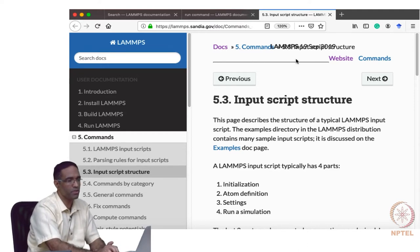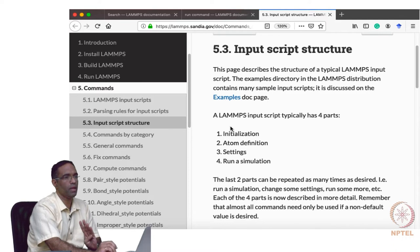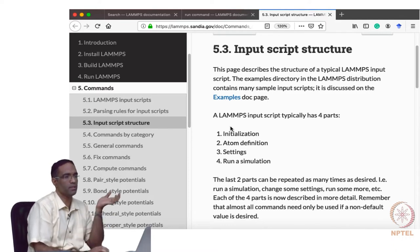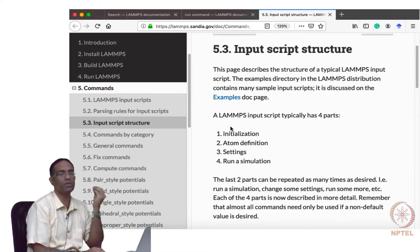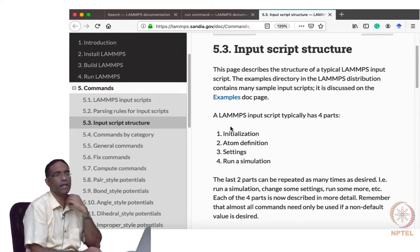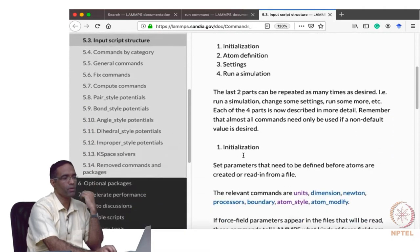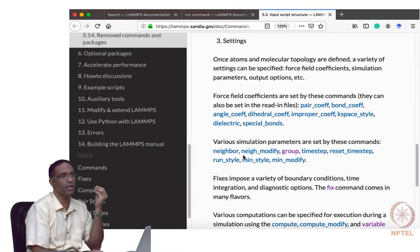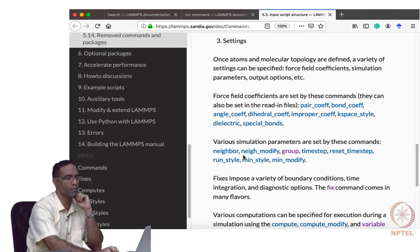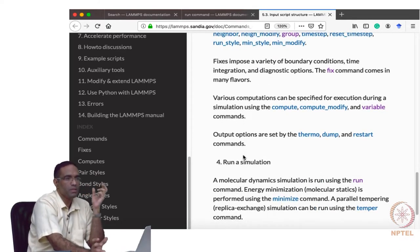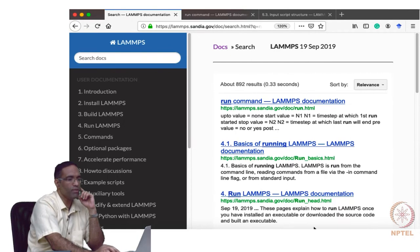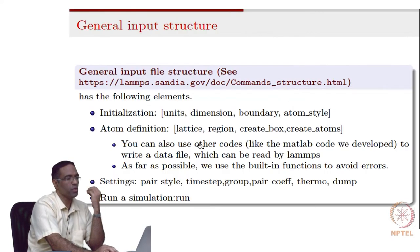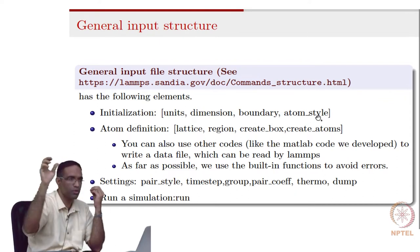Initialization means you can construct your crystal structure, define the atom's mass, its charge, and so on. There are several commands associated with each of these categories. Some commands listed for initialization are: units, dimension, boundary, and atom style. These are keywords used in LAMMPS to define certain things. For atom definition: lattice, region, create box, and create atoms - all these commands are used to do things associated with defining the structure you are dealing with.